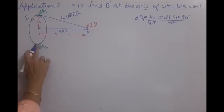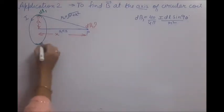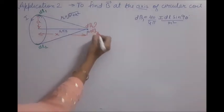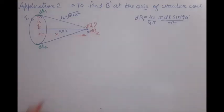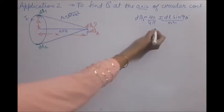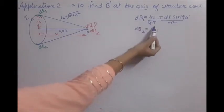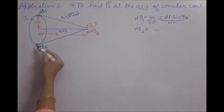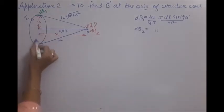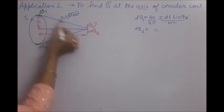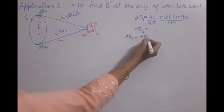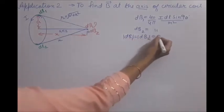For the second length element DL2, we apply the same formula. The length of DL2 is the same as DL1, sin90° = 1 again, and the distance R is also the same because a and x are the same. So dB₂ = dB₁. The magnitudes of dB₁ and dB₂ are equal — we can call them both dB.